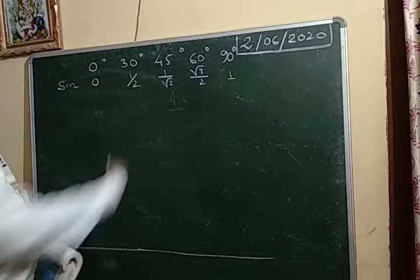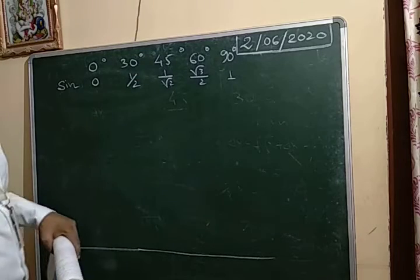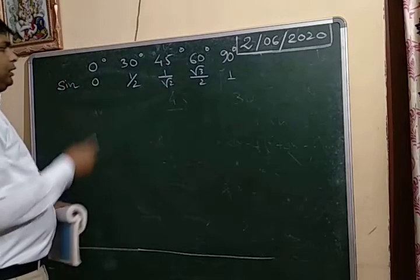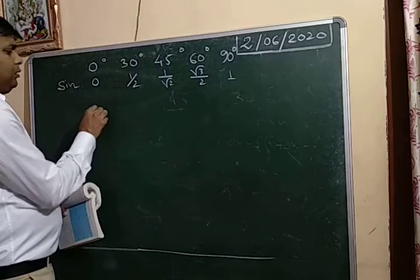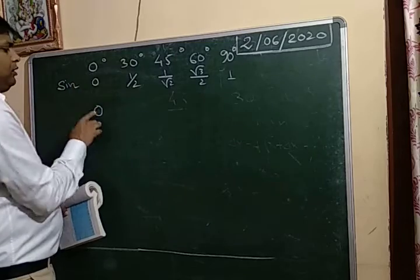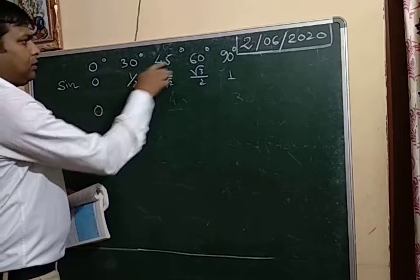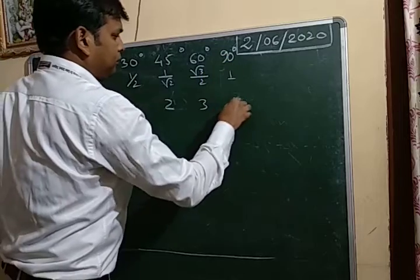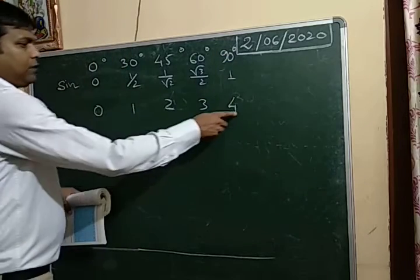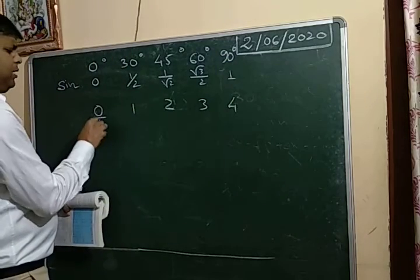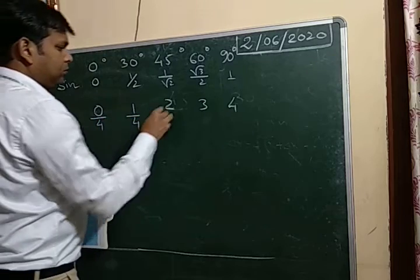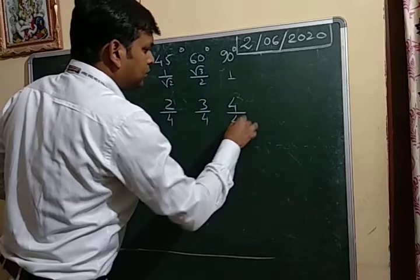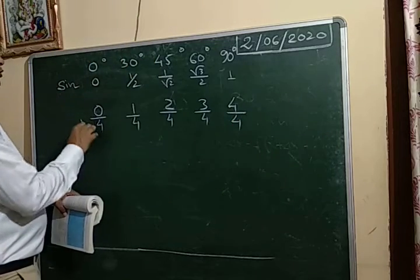If you know the first line then the other rows we can find out very easily. Let's see how to remember this first line. The first line will start from 0 degree. Then you write 1, then 2, then 3, then 4. The last value is 4. Now divide all the numbers by 4.